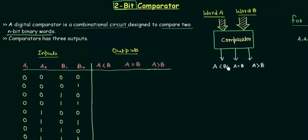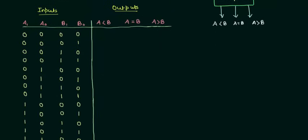The first output is for the case when A is less than B, the second output is for the case when A is equal to B, and the third output is for the case when A is greater than B. Let's move to the truth table for the 2-bit comparator.